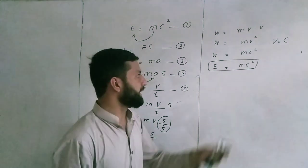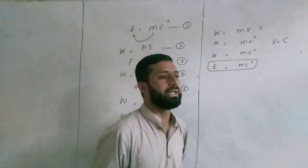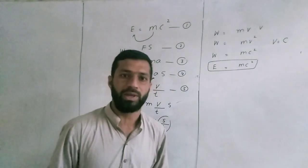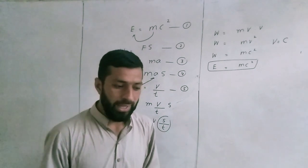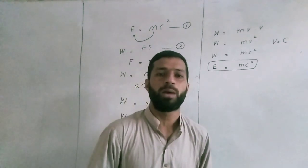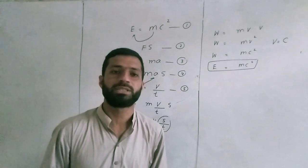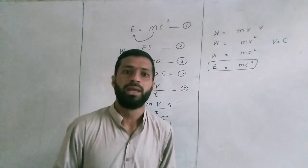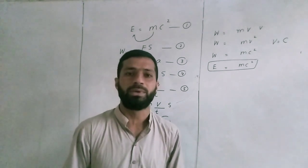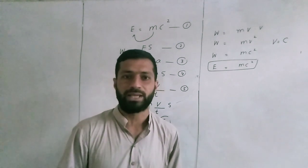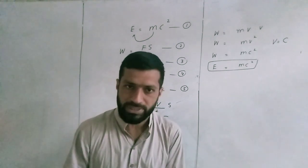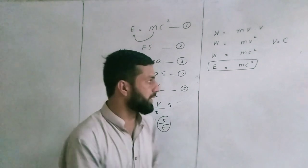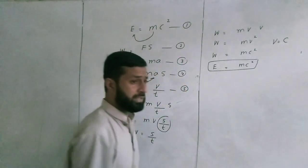Secondly, as I told you at the beginning of the lecture, why c squared is here. Actually, every equation follows the principle of homogeneity. An equation in physics is valid only if left hand side dimension equals right hand side dimension, if left side unit equals right side unit.